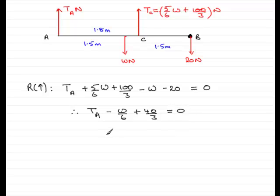So therefore, adding w over 6 and subtracting 40 thirds from both sides means that that tension in the rope acting at A is going to be w/6 minus 40 thirds, and we'll put that in brackets, and the units are newtons. Okay, so that gives us now the tension at A, and brings us to the end of this part of the question.